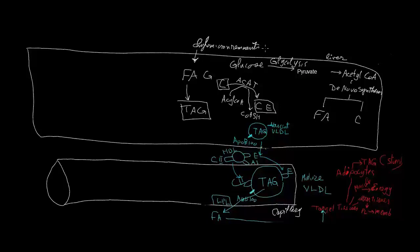In the fed state, insulin is the predominant hormone. When glucose enters the liver, glycolysis is activated by insulin because insulin activates glucokinase and phosphofructokinase 2. So glycolysis goes on and pyruvate is produced.